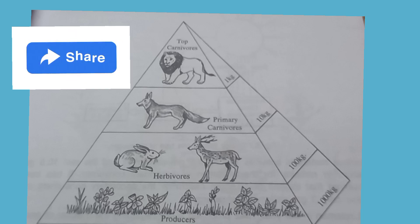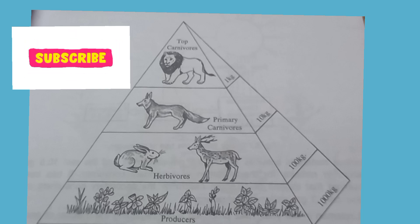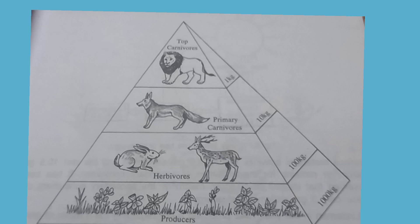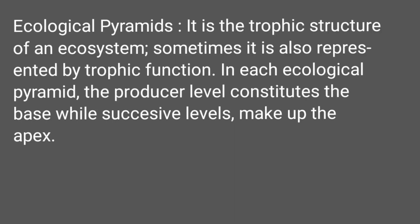Hello friends. In this video we will learn about different types of ecological pyramids. Ecological pyramids represent the trophic structure of an ecosystem, sometimes also represented by trophic function. In each ecological pyramid, the producer level constitutes the base while successive levels make up the apex.